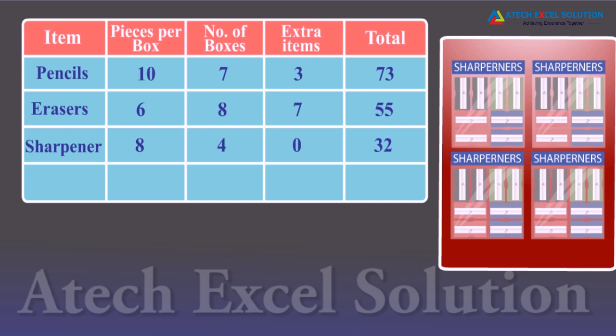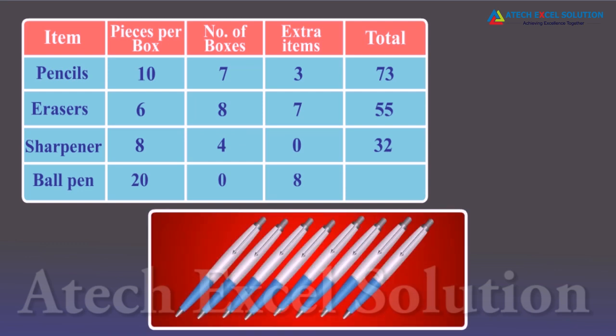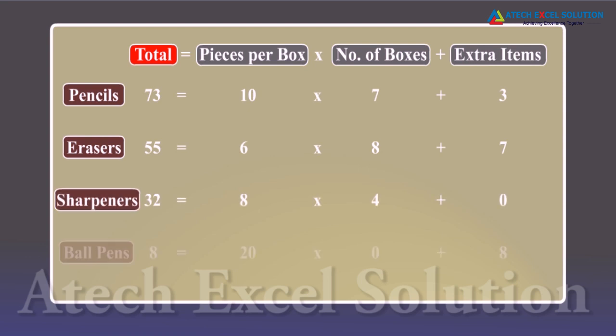The stationary man has four boxes of sharpeners, each containing eight pieces and no extra sharpener, resulting in a total of 32 sharpeners. He has boxes containing 20 ball pens per box, but right now he only has eight ball pens with no full box, giving a total of eight ball pens. Looking at each row, we find a definite pattern for getting the total number of items.